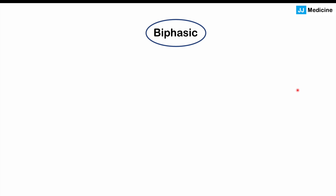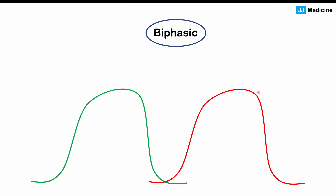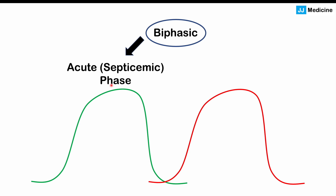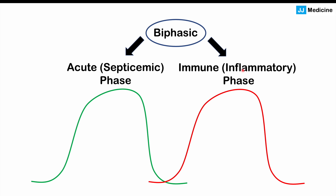When individuals develop symptoms, they follow a biphasic pattern — though not in every case. There is an increase and peaking of symptoms, then a lull, followed by a re-emergence and second peak before resolving. The first phase is the acute or septicemic phase, when bacteria are in the bloodstream, occurring in the first week. The second phase is the immune or inflammatory phase, when the immune system develops antibodies, potentially causing severe symptoms in the second week.